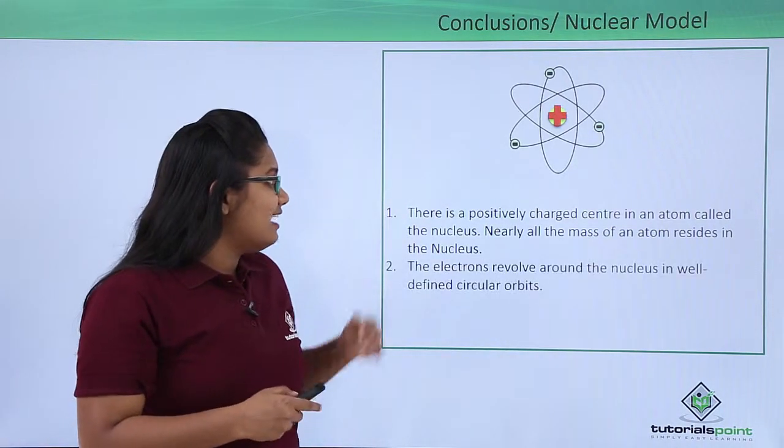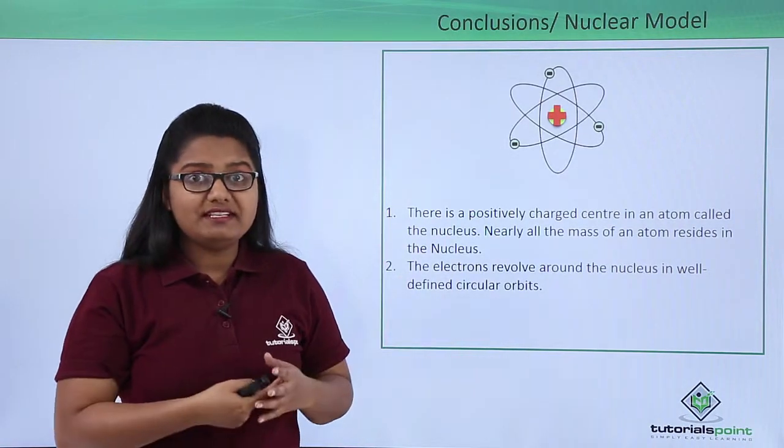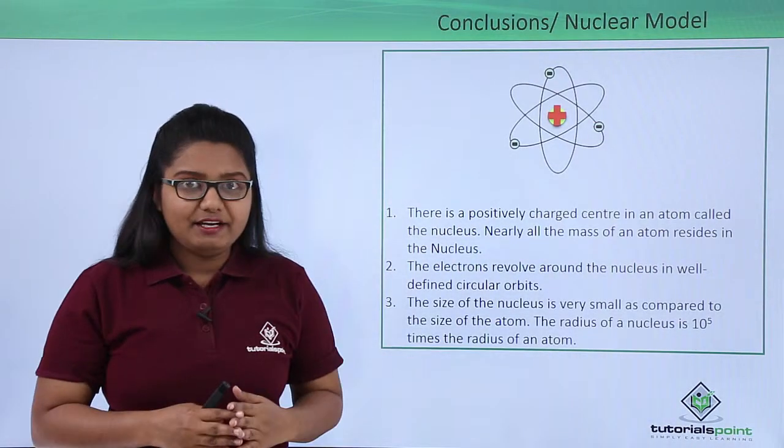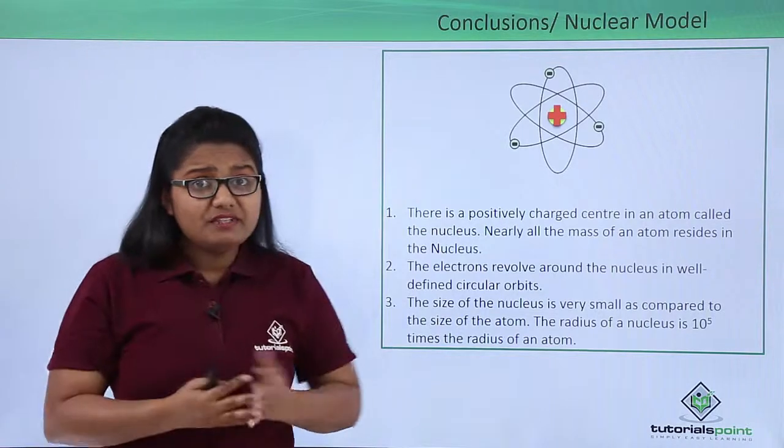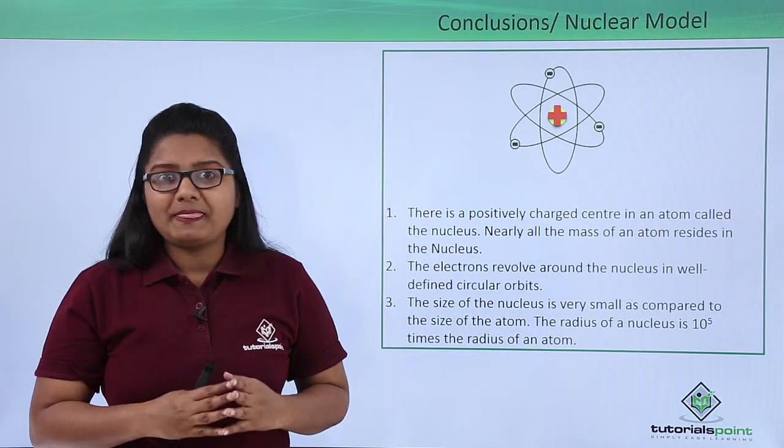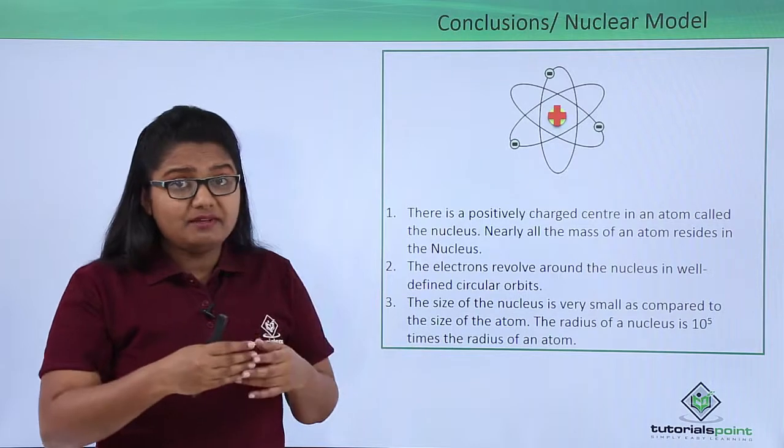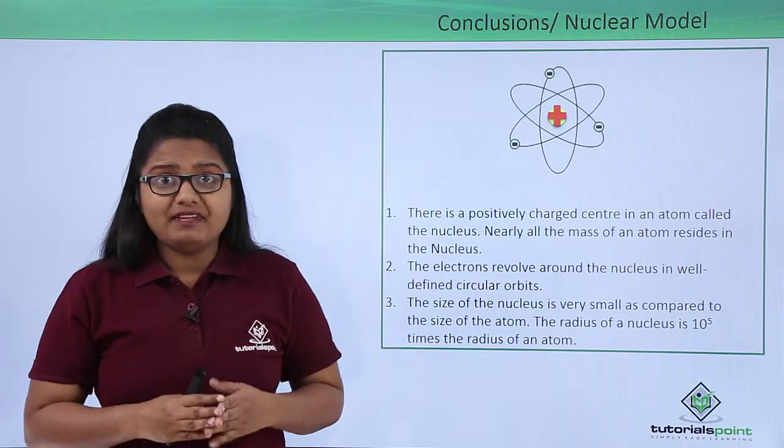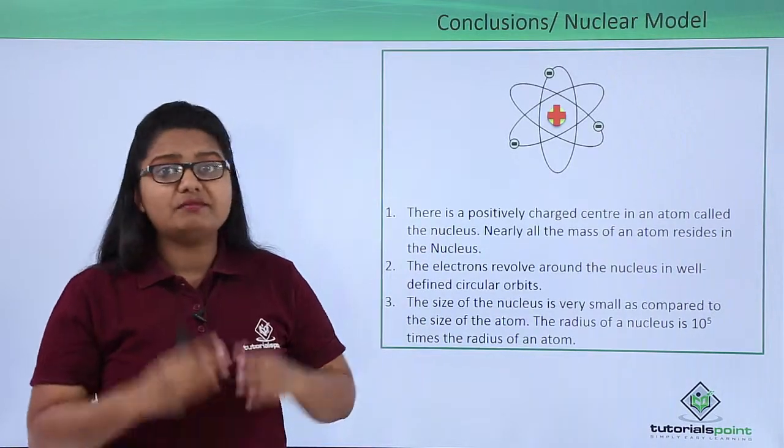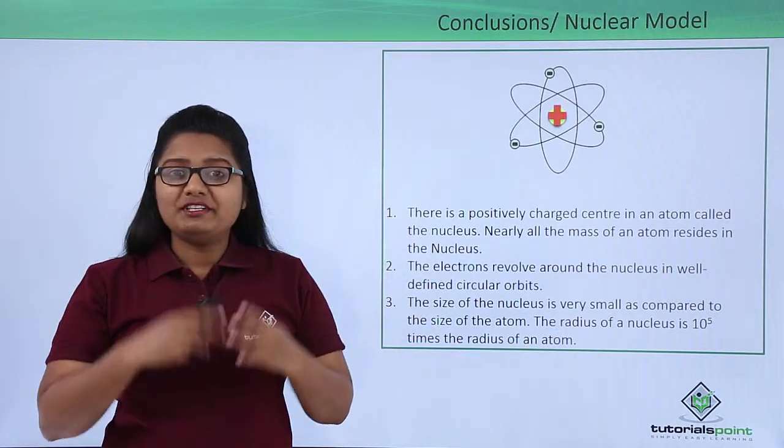The second postulate was that electrons revolve around the nucleus in circular orbits. The third was that the size of the nucleus is very small compared to the size of the atom. He measured the radius of the nucleus and found it was around 10^5 times smaller than the radius of an atom.